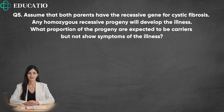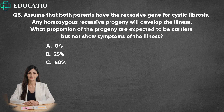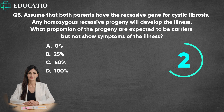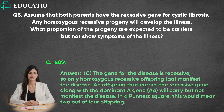Question 5. Assume that both parents have the recessive gene for cystic fibrosis. Any homozygous recessive progeny will develop the illness. What proportion of the progeny are expected to be carriers but not show symptoms of the illness? Answer: C. The gene for the disease is recessive, so only homozygous recessive offspring (AA) manifest the disease. An offspring that carries the recessive gene along with the dominant A gene (Aa) will carry but not manifest the disease. In a Punnett square, this would mean two out of four offspring.